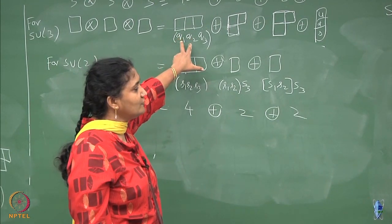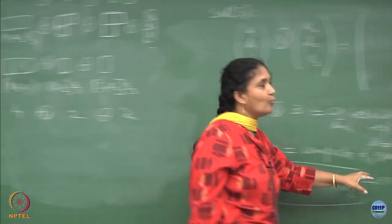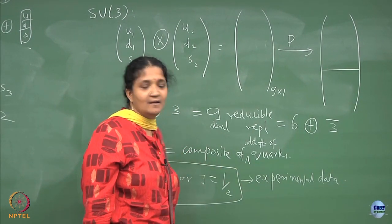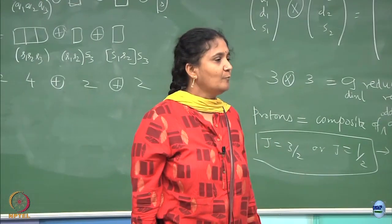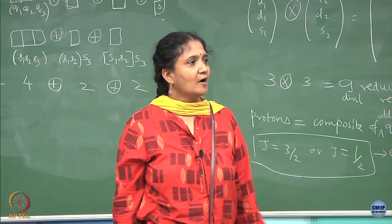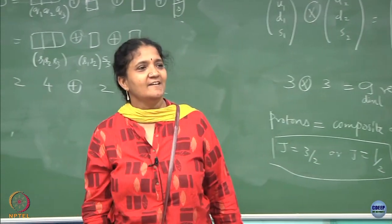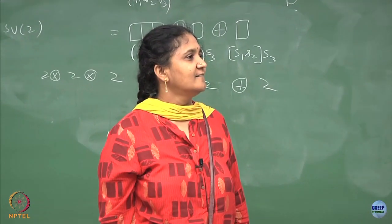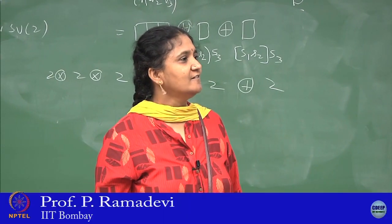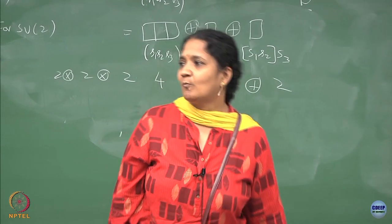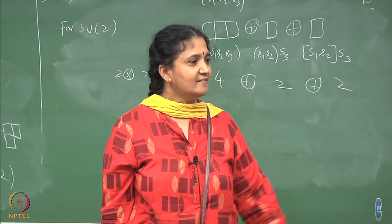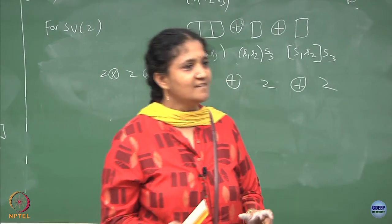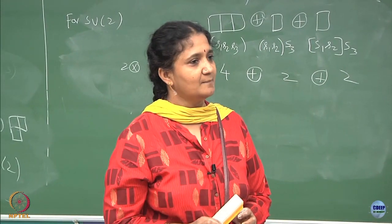This is an irreducible representation of SU(3) whose Young diagram has dimension 10 - those 10 states are the decuplet of spin-3/2 baryons. Baryons are the composites of 3 quarks. Proton is a baryon, neutron is a baryon. You can explain them from group theory as an irrep, and account for the 9 already-present states, with one more detected after 3 years, validating that the SU(3) quark model is the right approach to understand the set of baryons with spin 3/2.